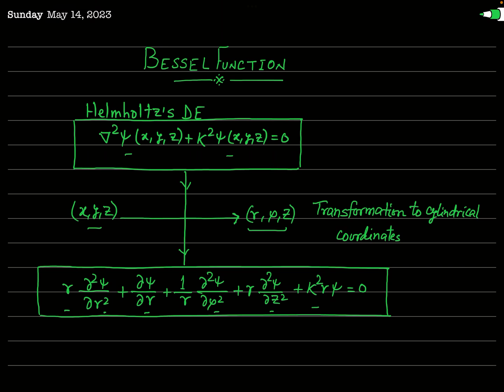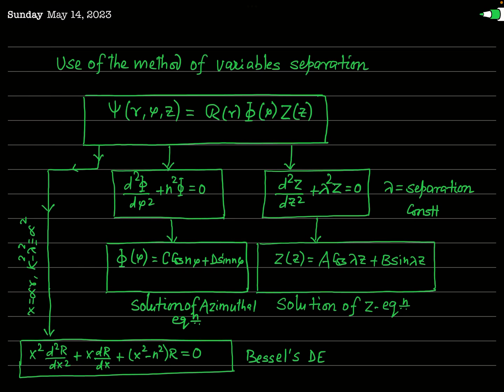This is the Helmholtz differential equation in cylindrical coordinates. The function psi depends on three independent variables: r, phi, and z. Since this is a second-order partial differential equation, we use the method of variable separation, writing psi(r, phi, z) equal to R(r) times Phi(phi) times Z(z).